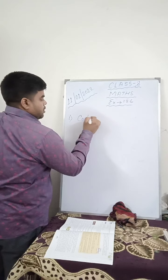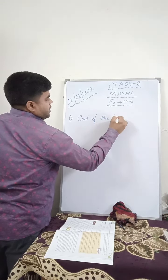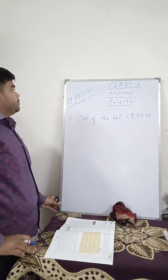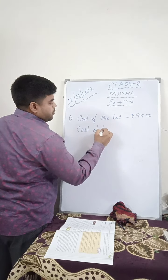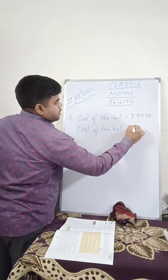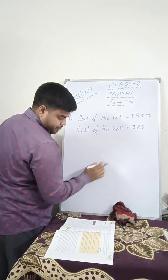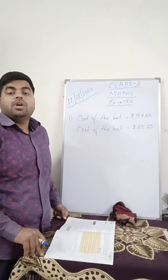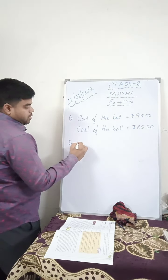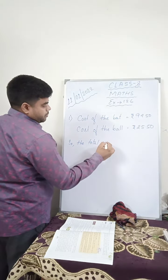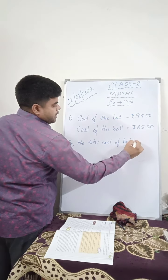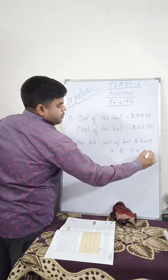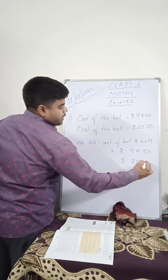So let us write: cost of the bat is Rs. 94.50. Next, cost of the ball is Rs. 25.50. Cost of the bat is Rs. 94.50 and cost of the ball is Rs. 25.50. So what is the total cost? The total cost of the bat and the ball is Rs. 94.50 plus Rs. 25.50.